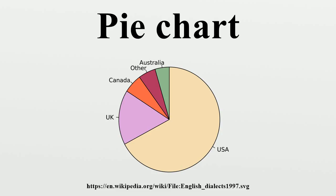A donut chart is a variant of the pie chart, with a blank center allowing for additional information about the data as a whole to be included. A chart with one or more sectors separated from the rest of the disk is known as an exploded pie chart. This effect is used to either highlight a sector, or to highlight smaller segments of the chart with small proportions.